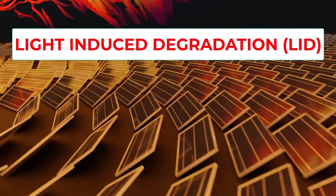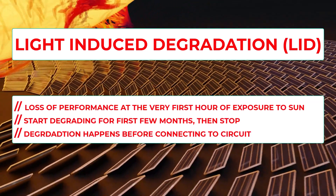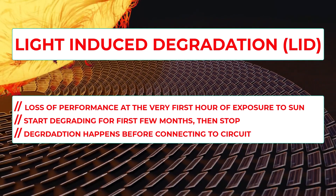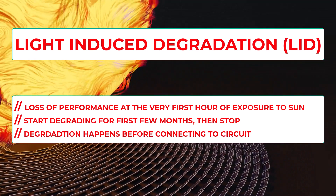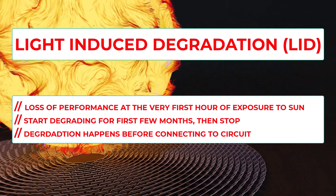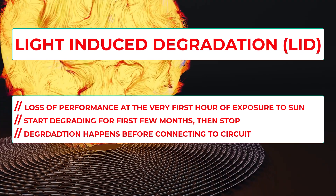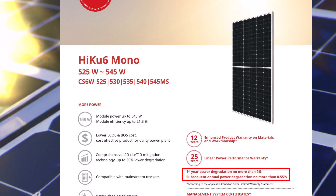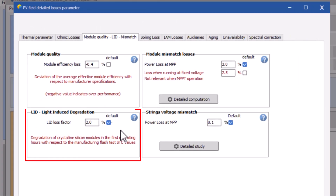Next is LID loss, or light-induced degradation. LID is basically a loss of performance arising in the very first hours of exposition to the sun with crystalline modules. This loss is effective for the first-time exposure, and you can say it starts as soon as you complete the stringing of modules. Interestingly, you'll get this loss value in most module datasheets, and the value is almost the same for all new modules available in today's market. By default, PVSyst considers this as 2%, but if you look into datasheets it will be around 1.8% at max. So we are assigning the value of LID loss here as 1.8%.